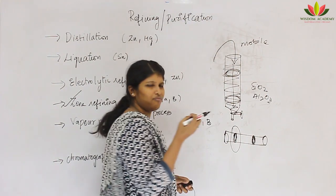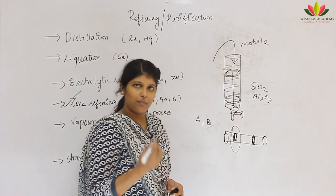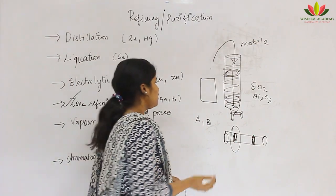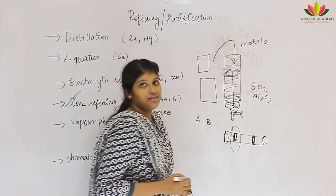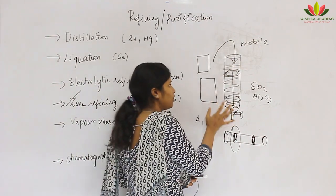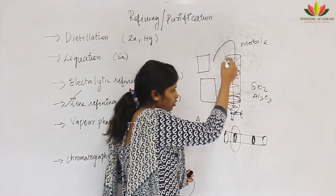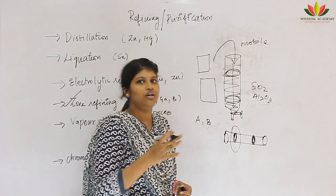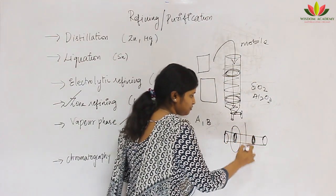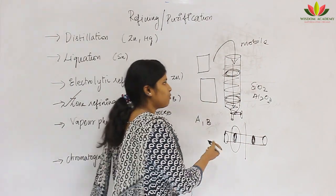For very small quantities, we use paper chromatography — paper is used instead of a column because paper also adsorbs the solvent. Another technique is thin layer chromatography using a small plate. The principle is the same: a stationary phase and a mobile phase, with components adsorbing in different regions of the stationary phase, which are then separated by physical methods.